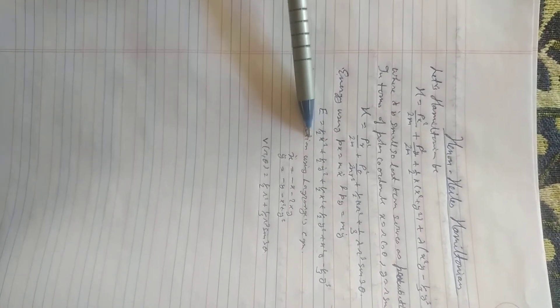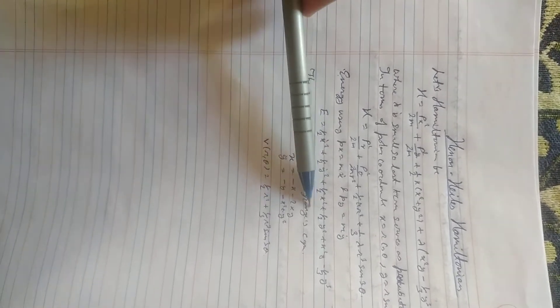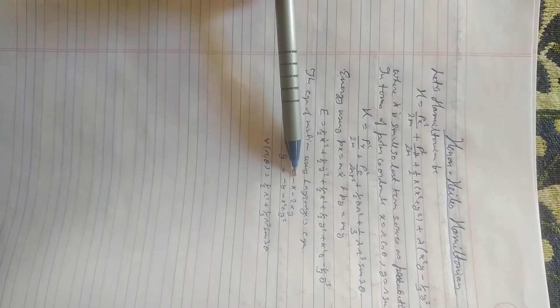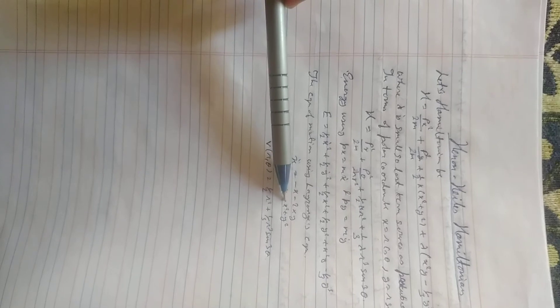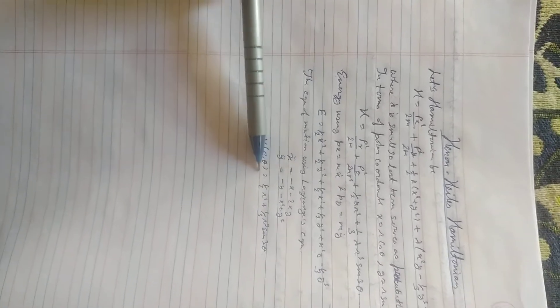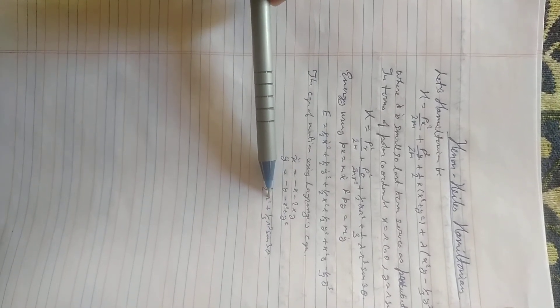Using equation of motion using Lagrange's equation, x double dot equals minus x minus 2xy, y double dot equals minus y minus x square plus y square. Br theta equals half r square plus 1 by 3 r cube sin theta sin 3 theta.